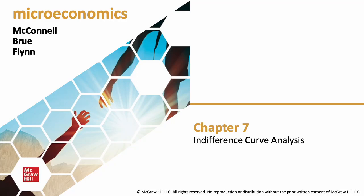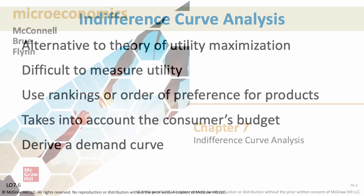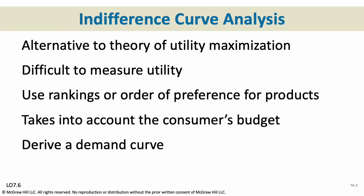Hello everybody, and we're going to take a look at chapter 7 appendix slides on the indifference curve. The indifference curve is an alternative to the theory of utility maximization. Remember, it is difficult to measure utility — we don't really have any units we can assign to it.